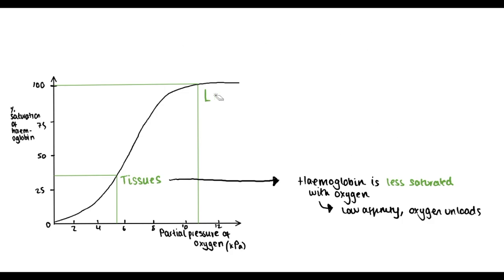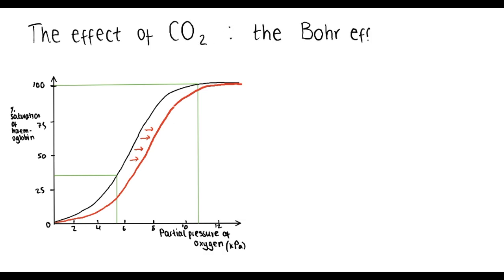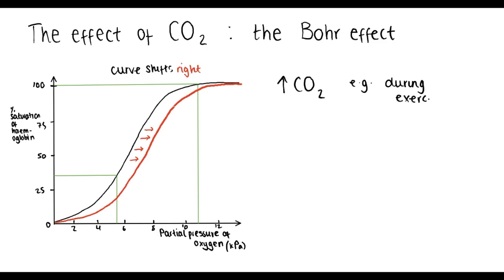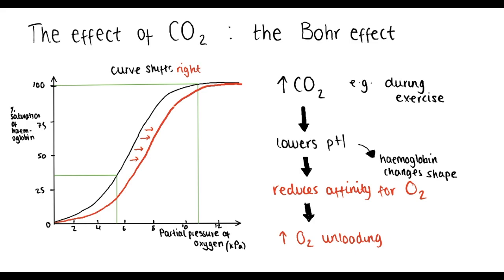Now let's look at when this curve can shift. Carbon dioxide causes the curve to shift to the right — this is called the Bohr effect. When we increase carbon dioxide in our blood, for example during exercise, we lower the pH of the blood. This reduces the affinity of haemoglobin for oxygen because haemoglobin changes shape, making it harder for oxygen molecules to bind. Overall, this is beneficial because it increases the amount of oxygen being unloaded from haemoglobin at the tissues, where it's used in respiration.